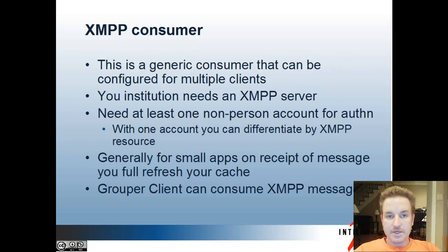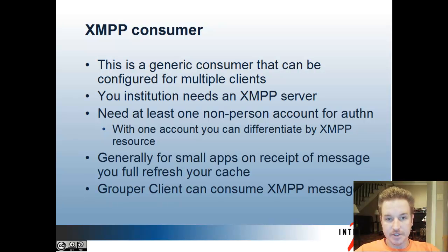Grouper can have an XMPP changelog consumer. This consumer is basically generic, so it can be used for multiple systems that need XMPP notifications from grouper. Your institution needs an XMPP server, or you need one you have access to, and you need at least one non-person account for authentication to the server. If you only have one account, you can differentiate by resource if you trust both sides to share the authentication. Basically, it's for smaller-size apps that aren't going to get too many notifications — they can get a message that says "refresh your cache," and the grouper client can consume XMPP messages to help you refresh the cache.